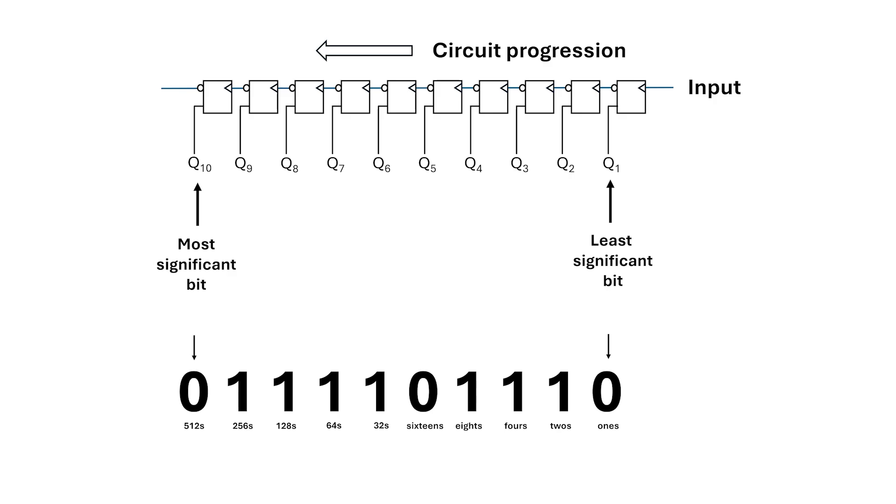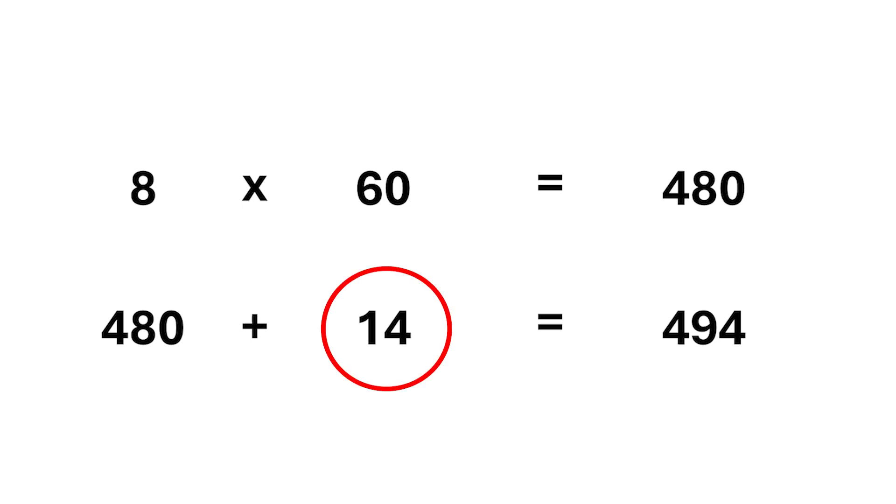So, I can read this number 0 1 1 1 1 0 1 1 1 0 as 256 plus 128 plus 64 plus 32 plus 8 plus 4 plus 2, which equals 494. For what time is this? Well, 8 times 60 is 480 plus 14 makes 494. So, this can be interpreted as 14 minutes past 8 o'clock.